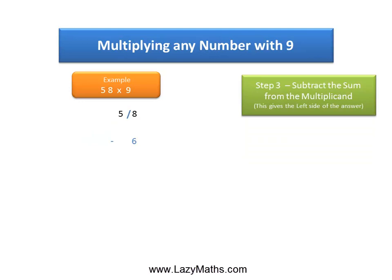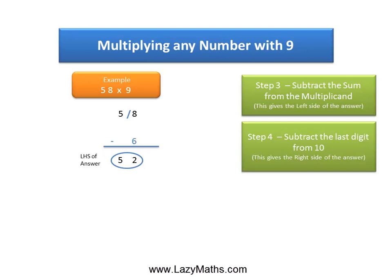The next step is straightforward. We simply subtract the 6 from the original number 58 and we get 52. 52 becomes the left-hand side of the answer.